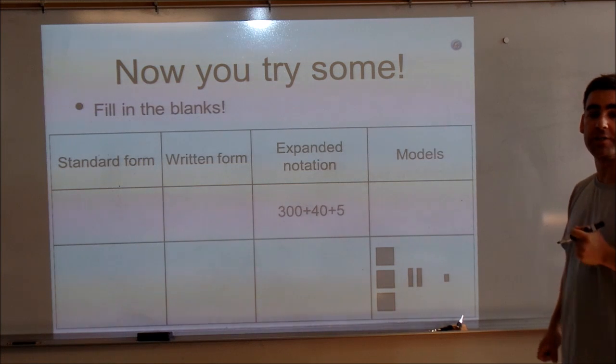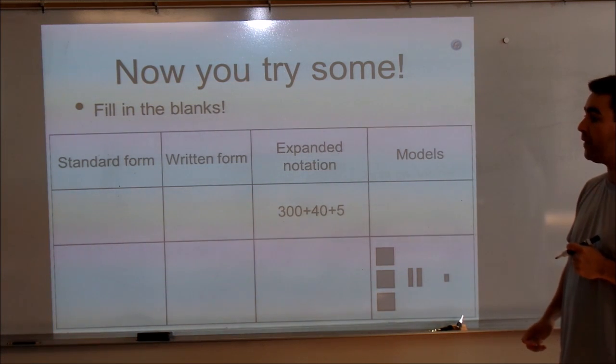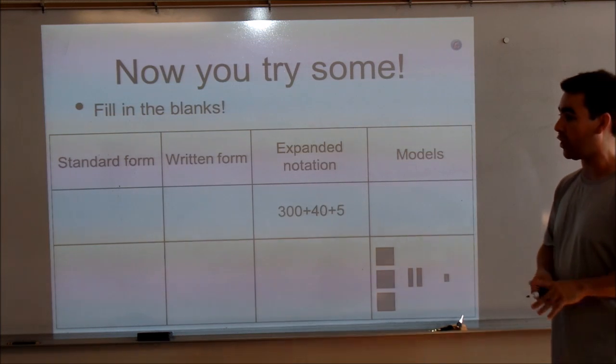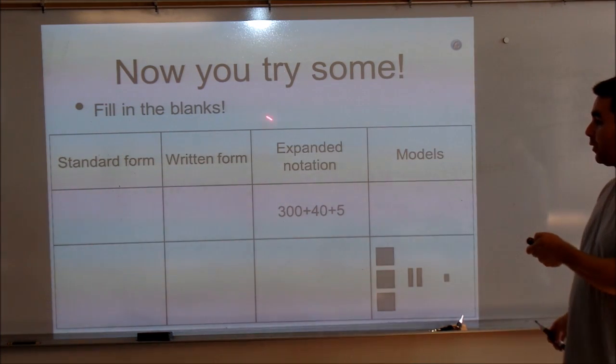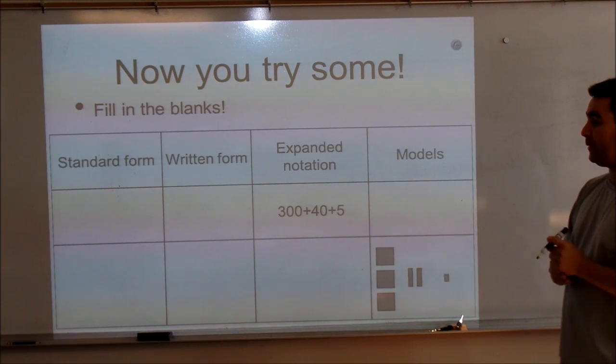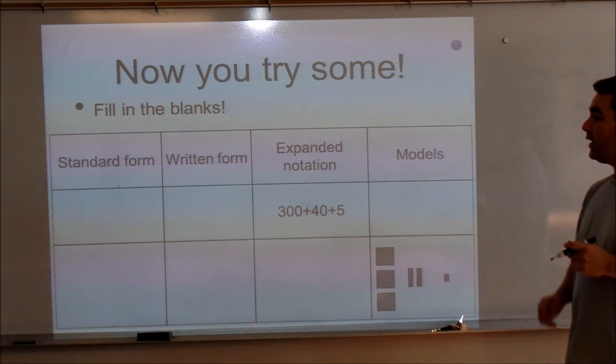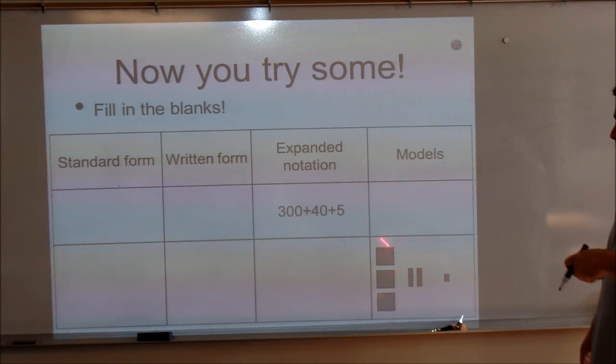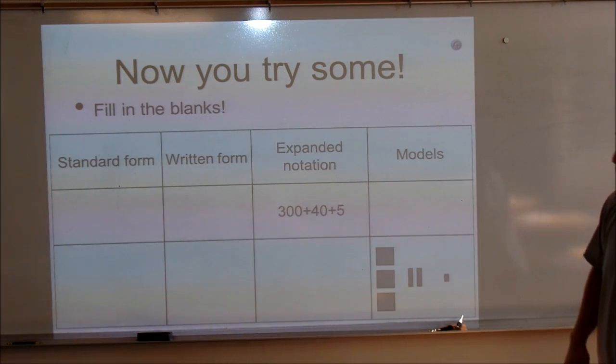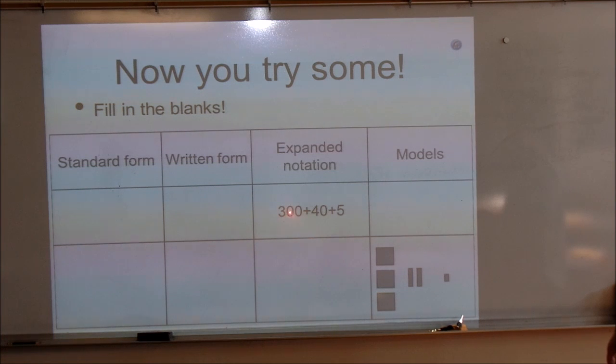Okay, now for a quick exercise that you may be able to do at home to help your student understand taking a number from any of these forms and creating it into the different ones. I've created a simple chart here that shows standard form, written form, expanded notation, and models. One great way to do it is to just fill in one form for a number on different lines and ask your student to try and fill in the rest of the blanks. So for example, in this first one, we have only the expanded notation version of the number. We see that we have 300 plus 40 plus 5. We need to fill in standard form, written form, and the models.